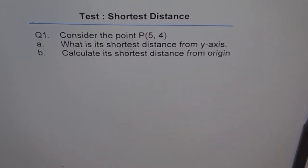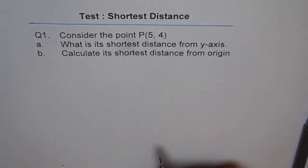Shortest distance. Question one: consider the point P(5, 4). What is its shortest distance from y-axis? Calculate its distance from origin. Now it's a very interesting problem. If you sketch it, it becomes absolutely clear.